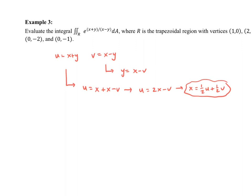So we're going to take this first one, u = x + y. And we're going to solve that one for x. So we have x = u - y. And then we'll plug that into this second equation. So we have v = (u - y) - y.